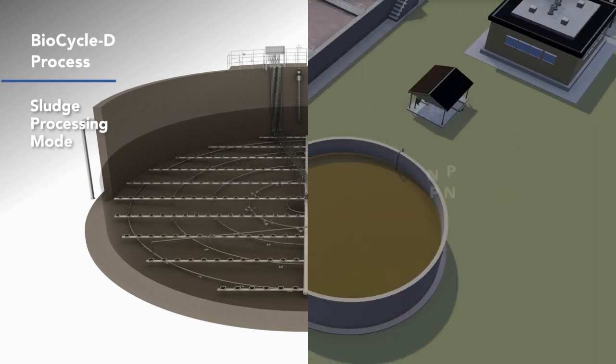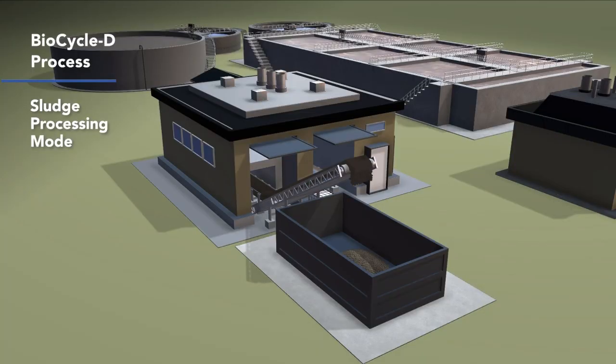BioCycle D can be designed to produce class B biosolids for land application, eliminating costly landfill fees. Combined with smaller volumes of sludge, BioCycle D substantially reduces disposal costs.